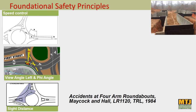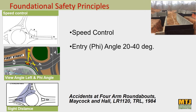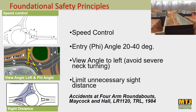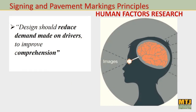Speed control is one of the predominant foundational elements of safety. Entry and phi angle, which I just mentioned, is illustrated here. View angle left is important to avoid severe neck craning. And then sight distance — it's different than we're used to: what the safety research calls for is precluding unnecessary sight distance, which improves safety by slowing people down. From signing and marking, the human factors research points out that our designs should reduce the demand made on drivers to improve comprehension — and if that's true for general intersections, it's going to be true in spades for roundabouts.